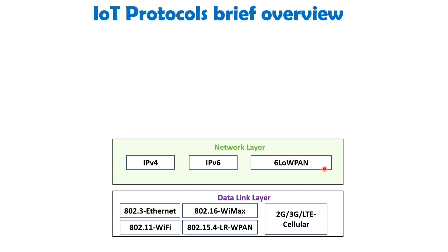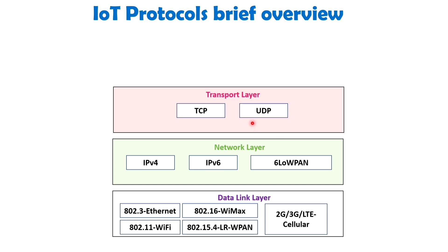Next is the transport layer, which plays a crucial role in facilitating reliable and efficient communication between processes running on different hosts in a network. It segments data received from the upper layer, such as the application layer, into smaller units called segments and ensures their reliable delivery. The two common transport layer protocols are Transmission Control Protocol (TCP) and User Datagram Protocol (UDP).